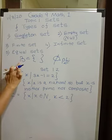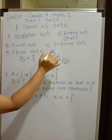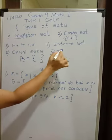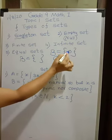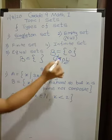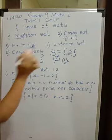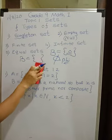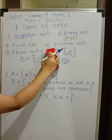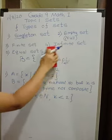If I write a set which has an element 0, this is not a null set. It is not an empty set because it has one element called 0. When absolutely nothing is inside, then you call it a null set or empty set.